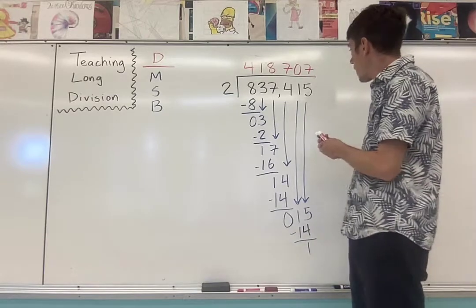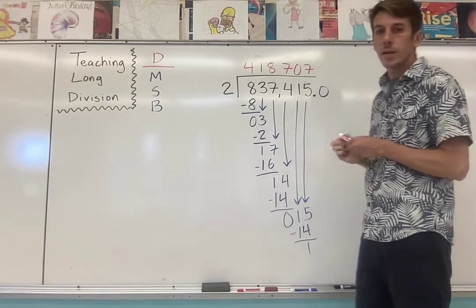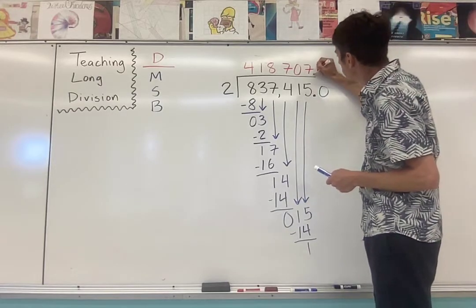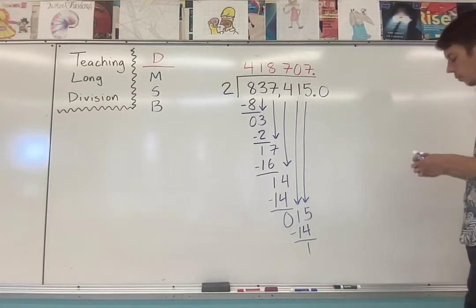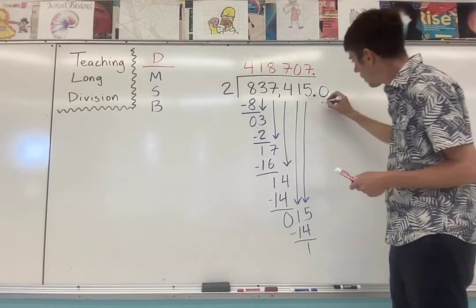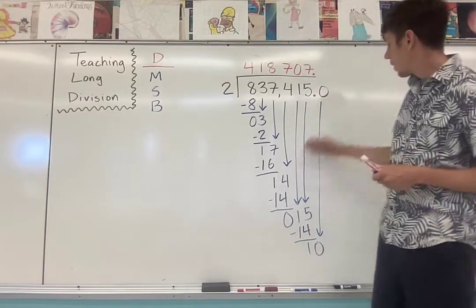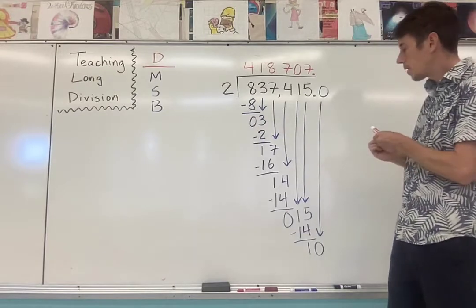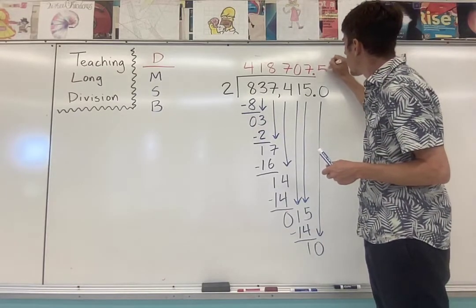Well, what you can do is just add the decimal point. And as soon as you add the decimal point in the garage, add it right up on the roof directly above. And just keep dividing as normal. So bring down the zero. Did a decent job of keeping it straight. I've got a little drift going, but that's okay. Two goes into 10 exactly five times. And we're done.